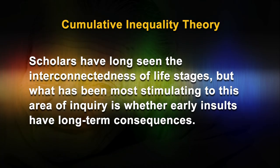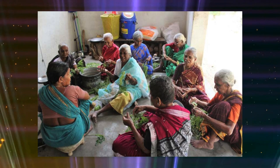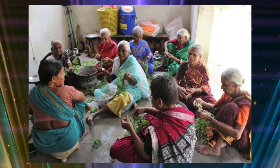This is not just in terms of personality formation and stability, but also in terms of achievement and well-being. Scholars have long seen the interconnectedness of life stages, and what has been most stimulating is whether early insults have long-term consequences, and whether later life outcomes are dependent on childhood experience. The answer to these questions appears to be affirmative, but isolating the mechanisms for these long-term connections remains a matter of continuing inquiry. Beyond childhood, gerontologists would be wise to recognize that reproduction is a fulcrum for defining the life course, trajectories, and population aging.